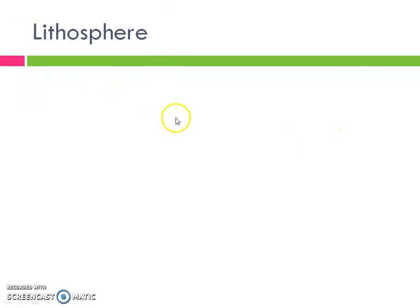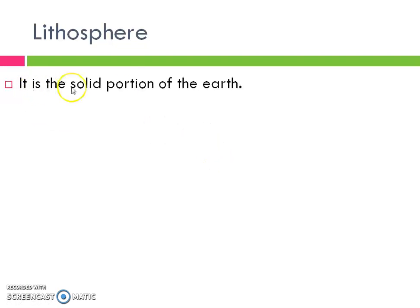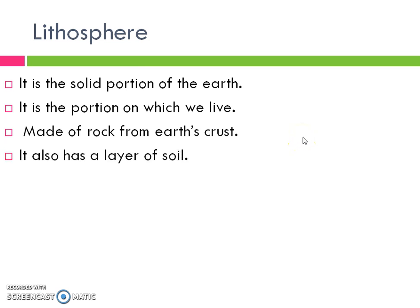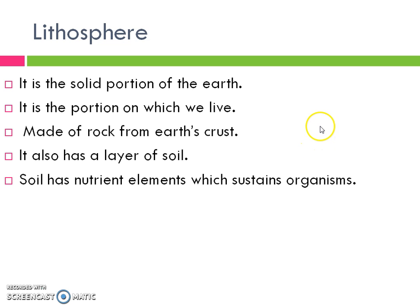The basic thing is lithosphere. Now what is lithosphere? It is the solid portion of the earth. Human beings live on this solid portion. This solid portion can be plains, plateaus, or mountain areas, which we are going to discuss in future lectures. For now, it is enough to understand that lithosphere is the solid portion of the earth on which we live. It is made up of rock from earth's crust and also has a layer of soil.